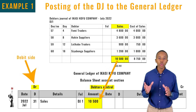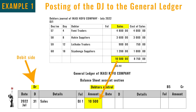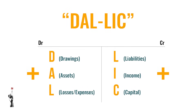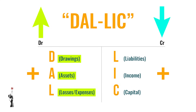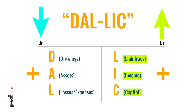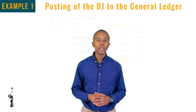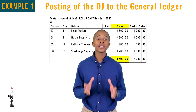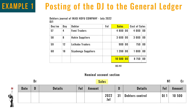Debtors control is an asset and assets increase on the debit side. Can you still remember the acronym DALIK? Drawings, assets, expenses or losses increase on the debit side and decrease on the credit side, whereas liabilities, income and capital increase on the credit side and decrease on the debit side.